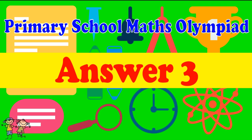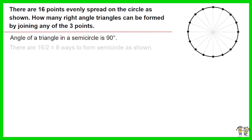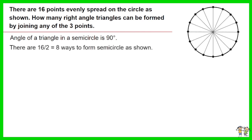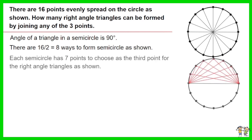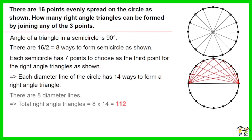Answer for Question 3. The angle in a semicircle is 90 degrees. There are 16 ÷ 2 = 8 ways to form a semicircle as shown. Each semicircle has 7 points to choose as the third point for the right angle triangles. As such, each diameter line of the circle has 14 ways to form a right angle triangle. There are 8 diameter lines. Thus the total number of right angle triangles equals 8 × 14. The answer is 112.